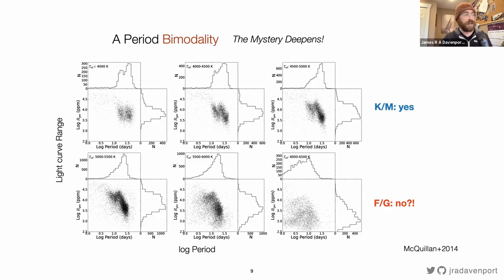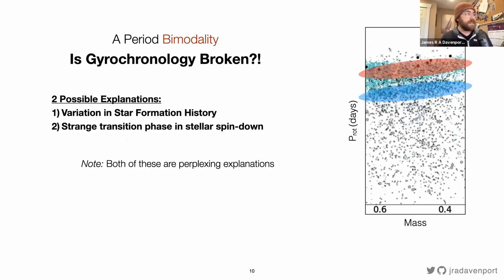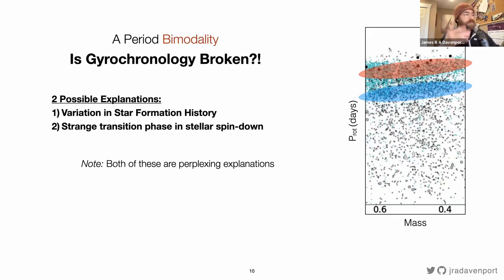From mid-F down to M dwarfs, anywhere there's a convective envelope, the angular momentum loss mechanism should work and gyrochronology should hold. So the question posed in 2013 and still active today is: is gyrochronology broken? This model was proposed in detail in the 1970s — smooth wind-driven angular momentum loss. The bimodal distribution suggests two possible explanations: either gyrochronology works and we're seeing a burst in star formation history encoded in rotation, or the gap reflects a break in stellar spin-down where stars are jumping over a semi-forbidden region in angular momentum space.